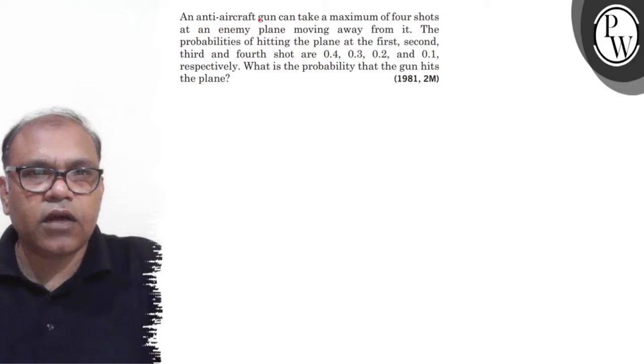An anti-aircraft gun can take a maximum of four shots at an enemy plane moving away from it. The probabilities of hitting the plane at first, second, third and fourth shot are 0.4, 0.3, 0.2 and 0.1 respectively. What is the probability that the gun hits the plane?